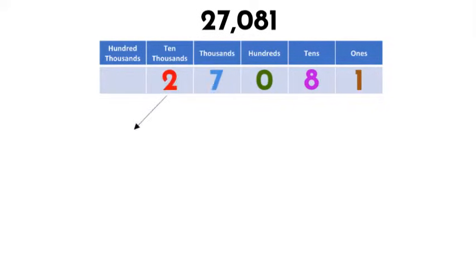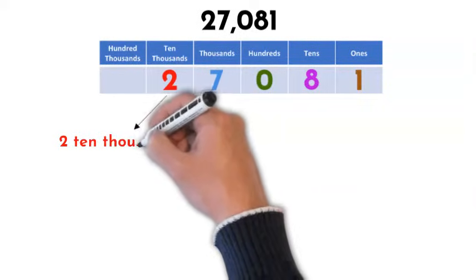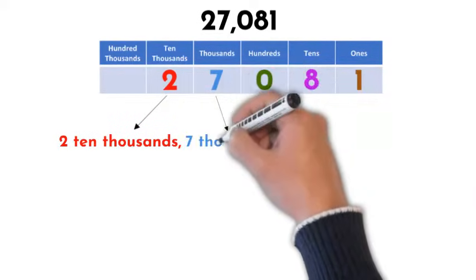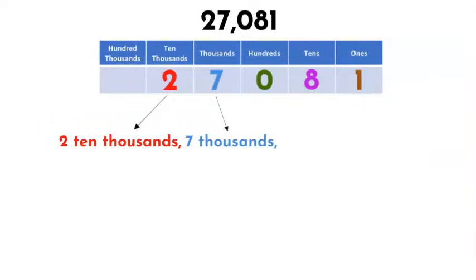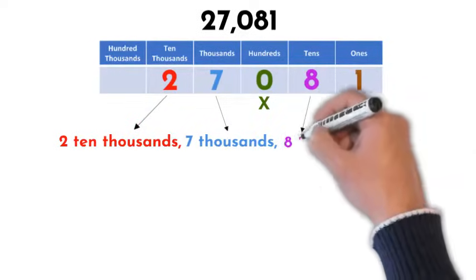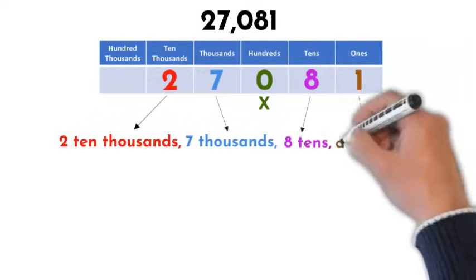So, let's decompose this into words. A 2 in the ten thousands place means we have 2 ten thousands. The 7 in the thousands place means we have 7 thousands. This 0 means we don't have any hundreds, so we don't have to write anything to represent hundreds. Next, we have 8 tens and just 1 one.